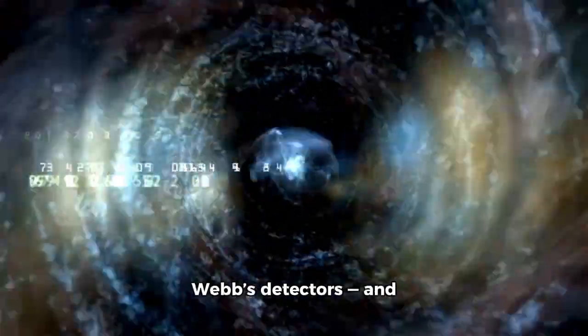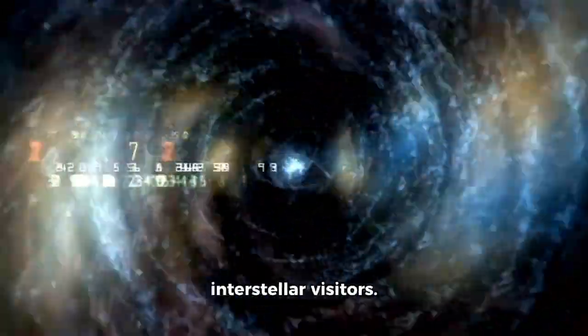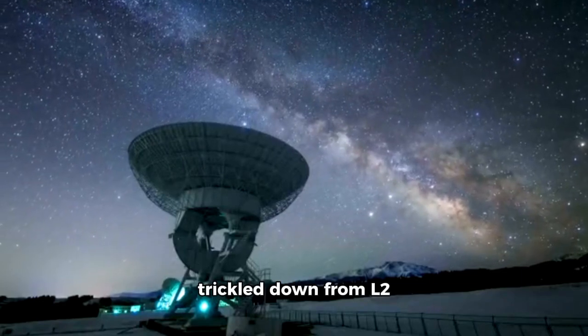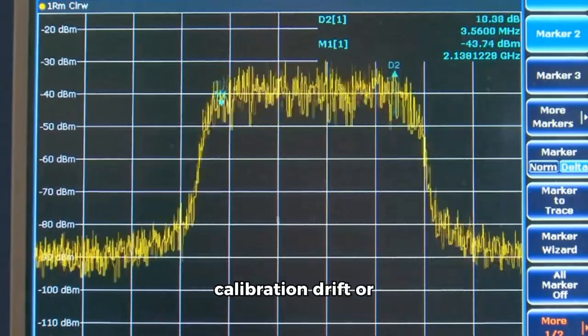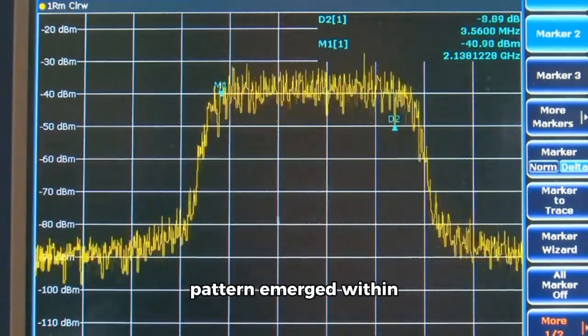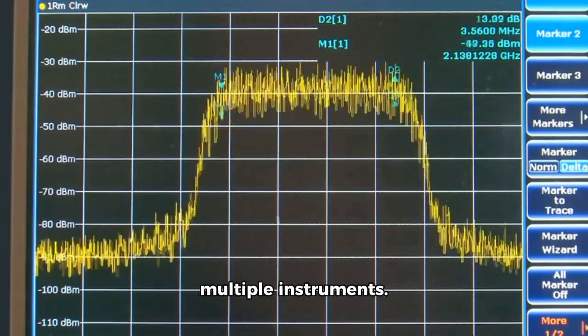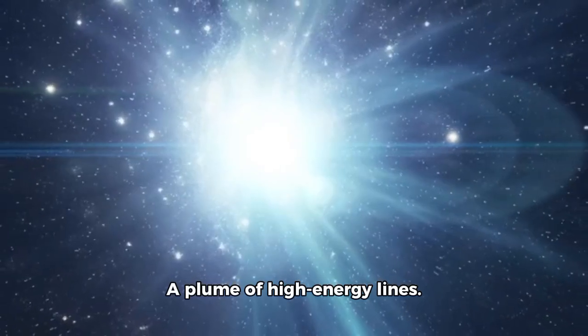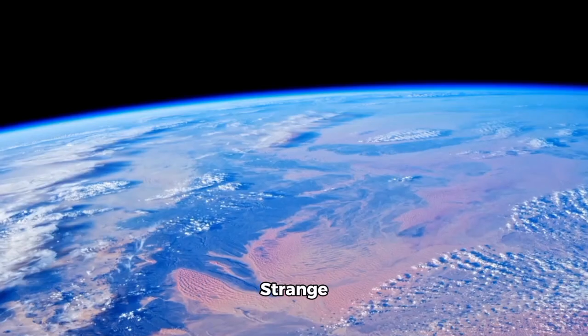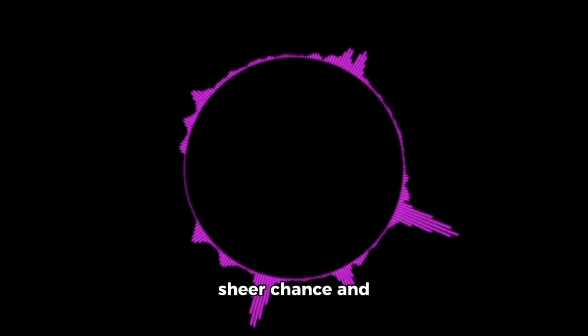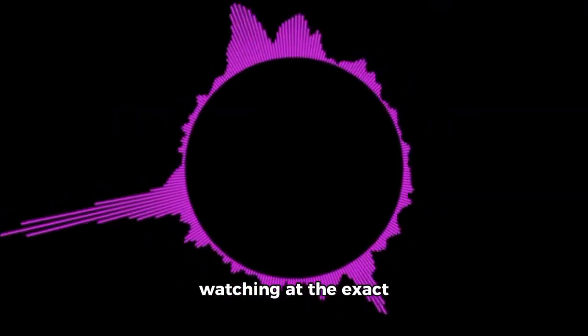What happened next defied Webb's detectors and every assumption about interstellar visitors. As the information trickled down from L2 over the deep space network, analysts spotted something strange. The signals didn't stay the same. They changed, blinked, and pulsated. Initially dismissed as calibration drift or noise, a consistent pattern emerged within minutes, appearing across multiple instruments. A sudden flash. A plume of high-energy lines. A change in the geometry of the dust. Something had hit 3I Atlas, and Webb, by sheer chance and precision, had been watching at the exact moment of impact.